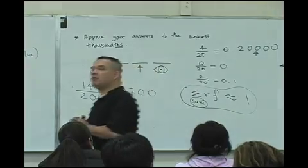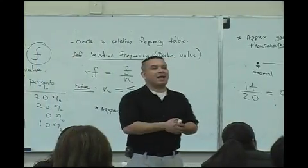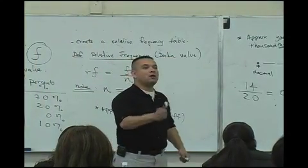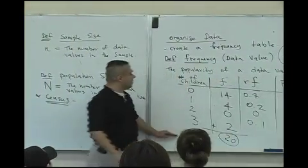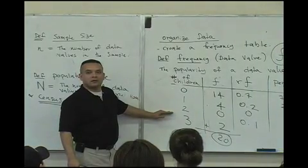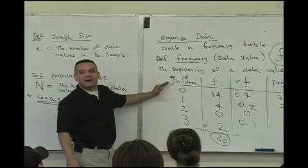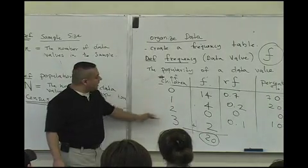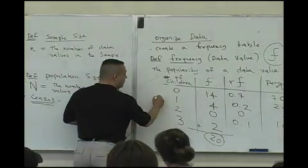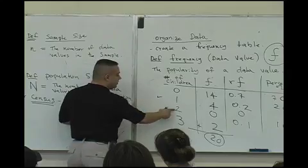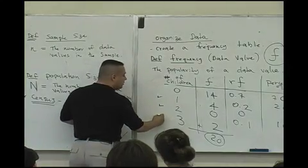So when they ask you what percent of the class has at least one child, go to the data value over here and find the values that satisfy the statement of being at least one. Which are they? The one. What else? The two. What else? The three.